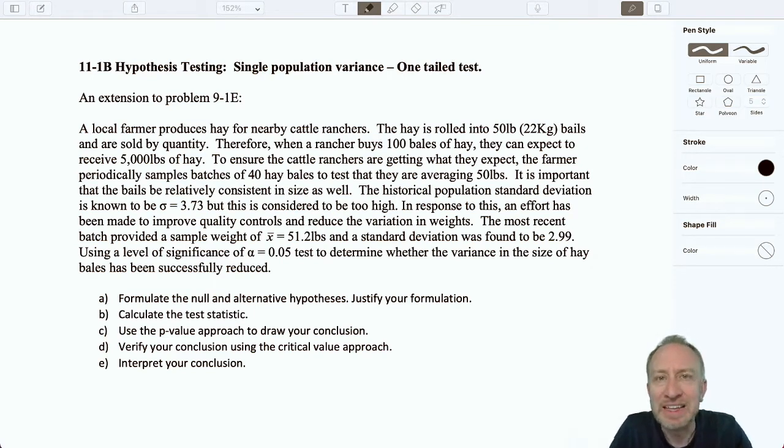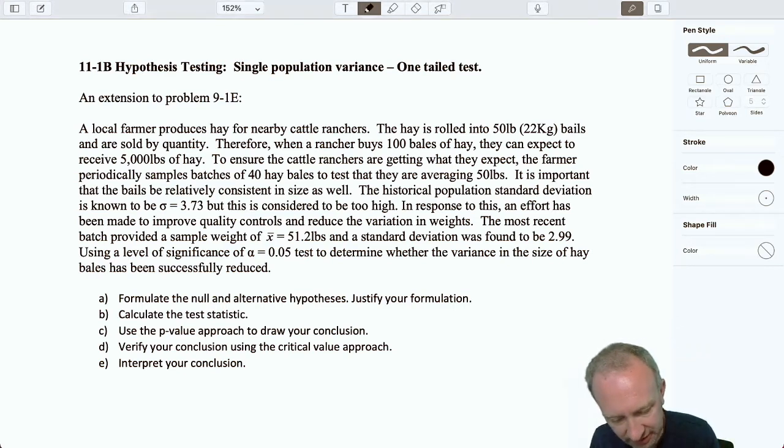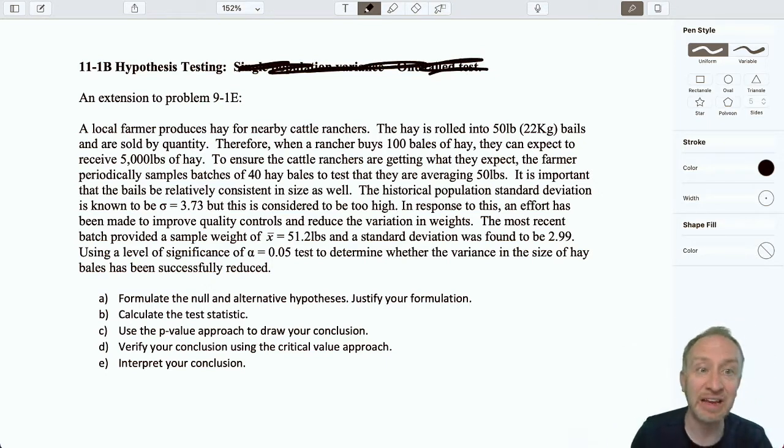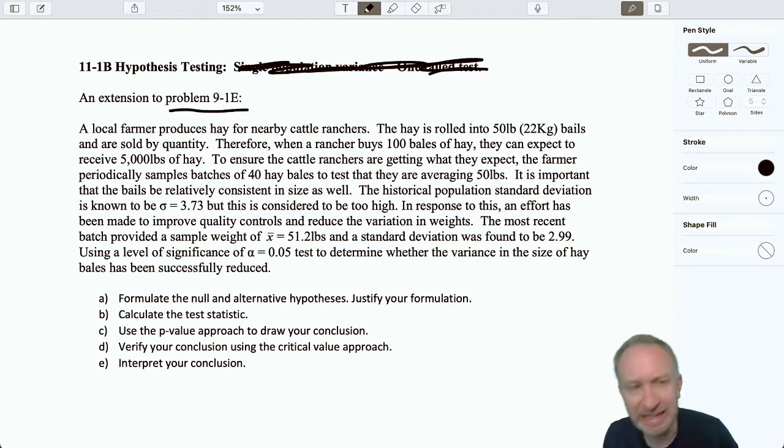Hello everybody and welcome back. This is now our second problem looking at a single population variance. One tail test, yes, but again, let's make sure that we can find that information for ourselves by reading through the problem. So again, I'm getting some economies of scale out of my problems here.